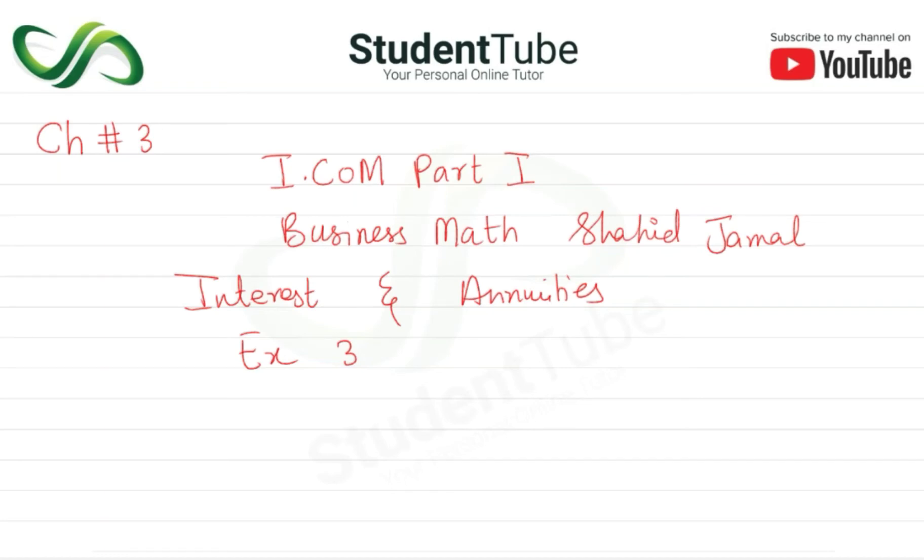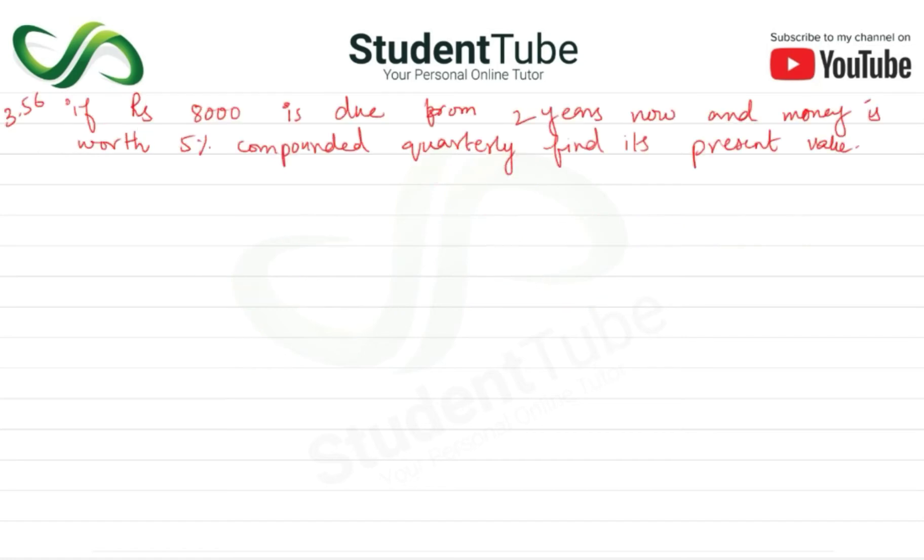Assalamu alaikum, welcome to Student Tube. Aaj ki is lecture mein Chapter 3, I.COM Part 1 Business Math by Shahid Jamal ki chapter hai Interest and Annuities, Exercise 3. Question 3.56: If rupees 8000 is